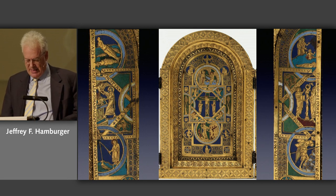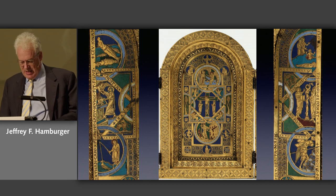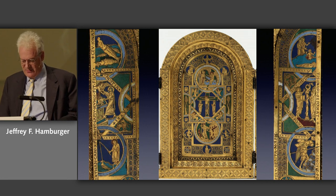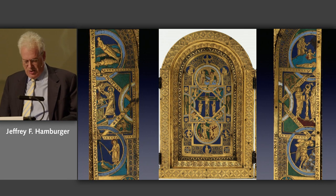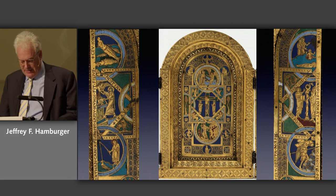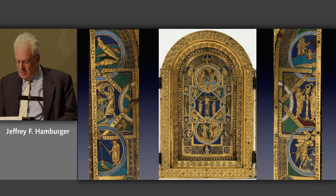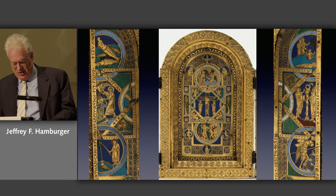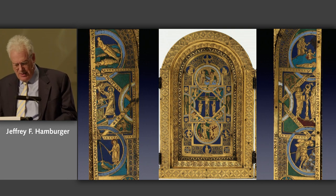Just as the trees to either side of the cross elaborate the vivifying power of Christ's sacrifice, thereby lending all the triptych's vegetable ornament a quickening charge, so too the verse inscriptions broadcast a strong soteriological message. For example, the verse accompanying the crucifixion itself reads: 'Christ dies on the cross and repays the debts of the first created man,' and that adjacent to the scene of the brazen serpent: 'Those whom the serpent bites, the image of the serpent restores.' In combination with the relics presumably once contained within the triptych, such proclamations lend the images an operative apotropaic power.